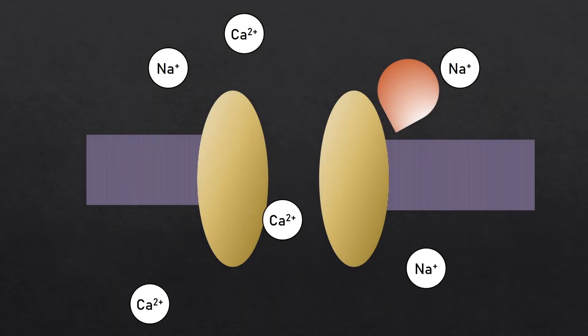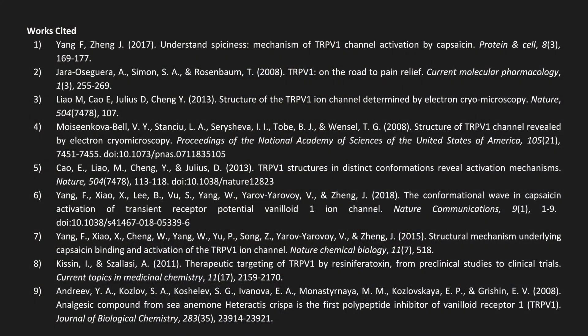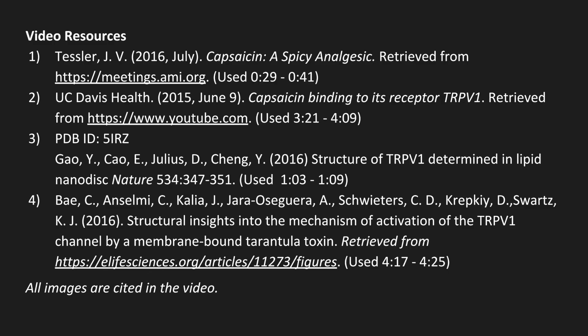By elucidating the mechanism of capsaicin binding to TRPV1, we can develop drugs that inhibit the activation of the receptor through competitive binding, blocking nociception at the source of the pain stimulus. Therefore, future work in this field includes developing an inhibitor of TRPV1 as an analgesic.